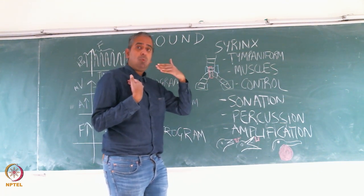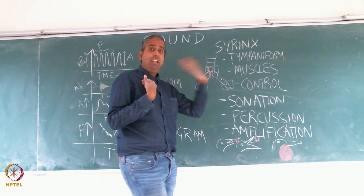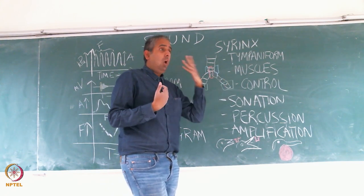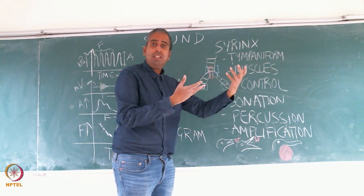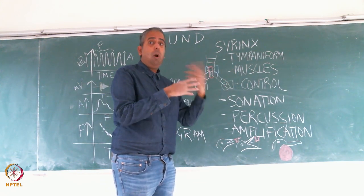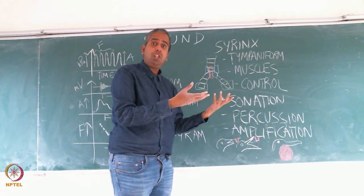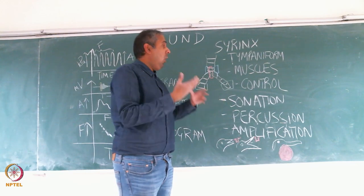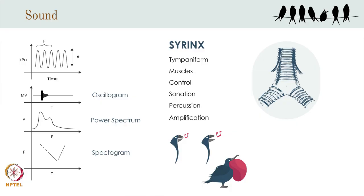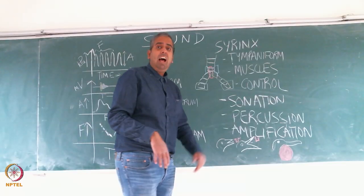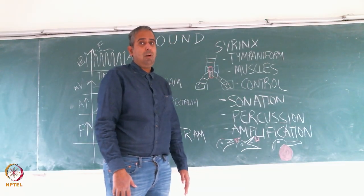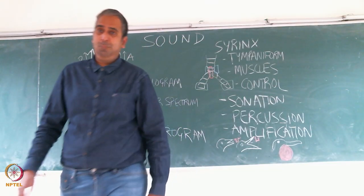Perhaps the most extreme example of amplification is the kakapo, a flightless parrot in New Zealand. It inflates itself with air, sits in a shallow bowl in the ground, and rushes all the air out at once in a boom. Not only does the air sac act as a resonator, but the bowl structure also resonates and amplifies the sound so it carries more than a mile. So using strategies both evolutionary and behavioral, birds are able to amplify and change the properties of the sound they produce. What happens once the sound leaves the bird — its ecological role, how songs are learned — that's something for subsequent lectures. Thank you.